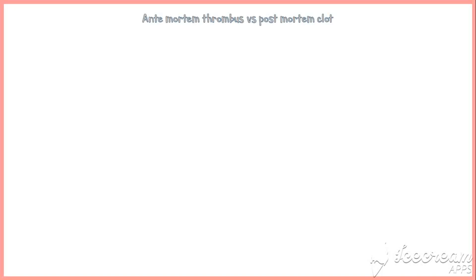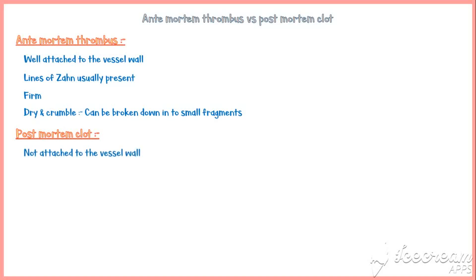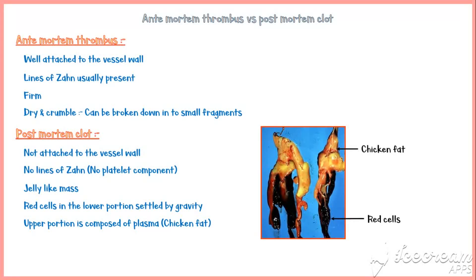Antemortem thrombi are well attached to the vessel wall, and lines of Zahn are usually present. They are firm, dry, and crumble — so they can be broken down into small fragments. In contrast, post-mortem clots are not attached to vessel walls, have no lines of Zahn because there is no platelet component. A post-mortem clot is a jelly-like mass containing red cells in the lower portion (settled by gravity) and plasma in the upper portion, also called chicken fat. Post-mortem clots are moist and soft, and can be pulled out in one mass.